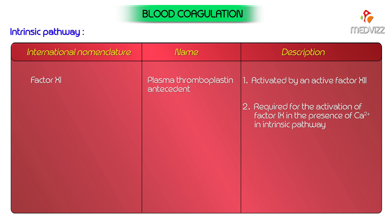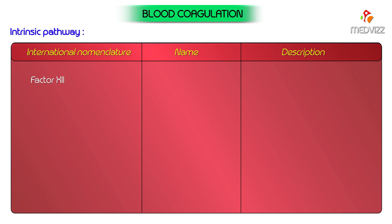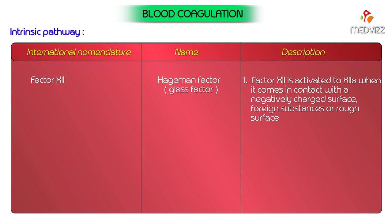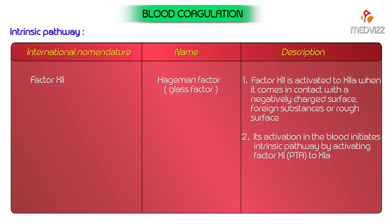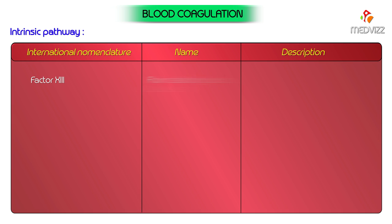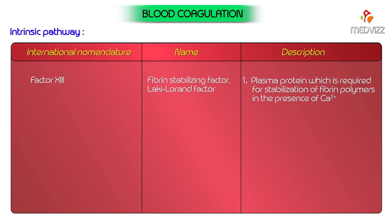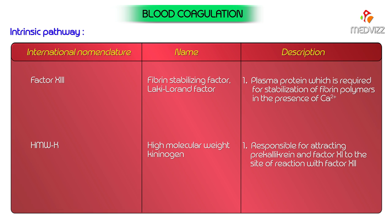Factor 12, Hegeman's factor (also known as glass factor): factor 12 is activated to factor 12a when it comes in contact with a negatively charged, foreign, or rough surface. Its activation in the blood initiates the intrinsic pathway by activating factor 11 to factor 11a. Factor 13, fibrin stabilizing factor (also known as Laki-Lorand factor): this is a plasma protein required for stabilization of fibrin polymers in the presence of calcium. High molecular weight kininogen is responsible for attracting pre-kallikrein and factor 11 to the site of reaction with factor 12.